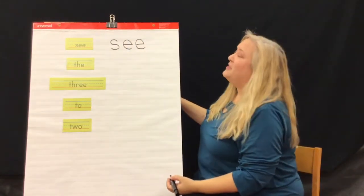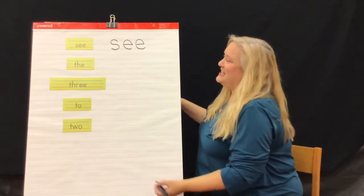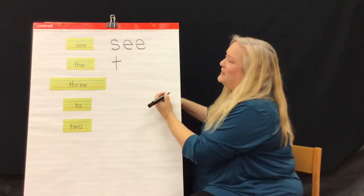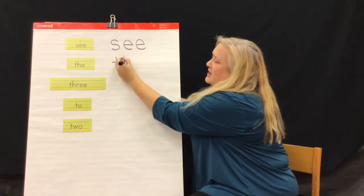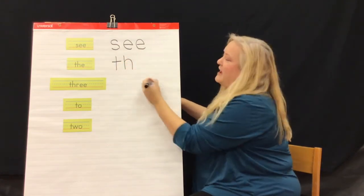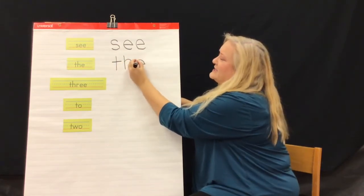Then we have the word the, T-H-E. Let's make our T, a tall line and cross a little line over. Then we have H, a tall line, come up over the hill, and down. And then we have our E again. Let's make our E.